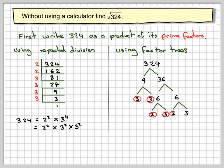Circling all the ends, which are prime numbers, again, we end up with the same result. 2 squared times 3 squared times 3 squared.